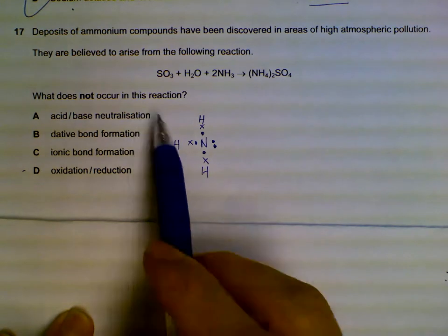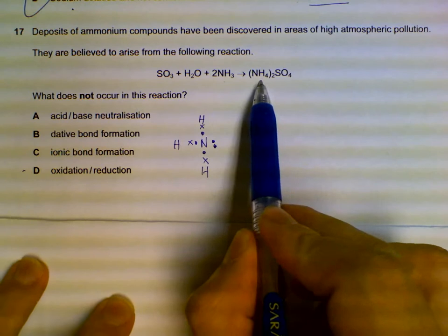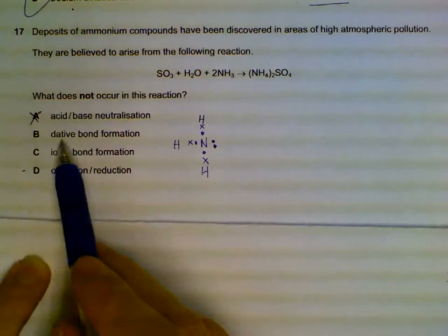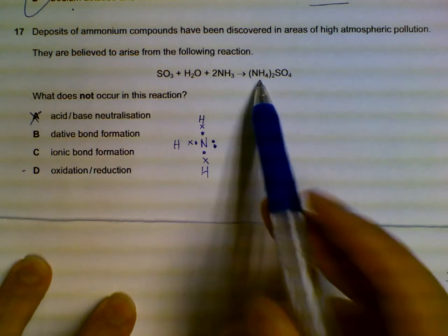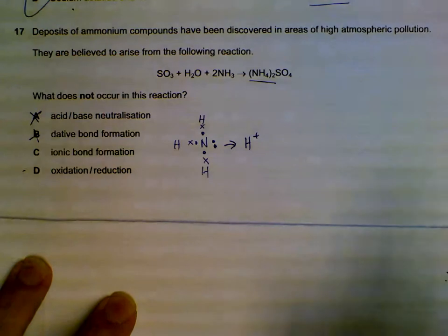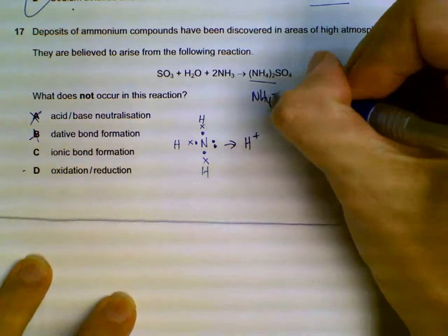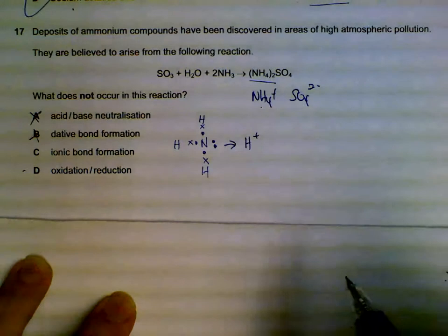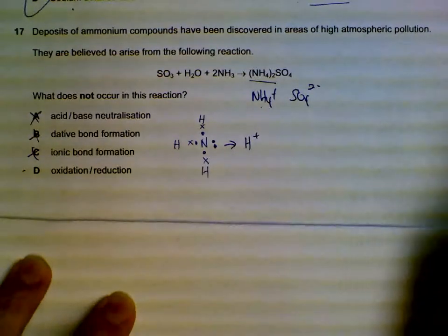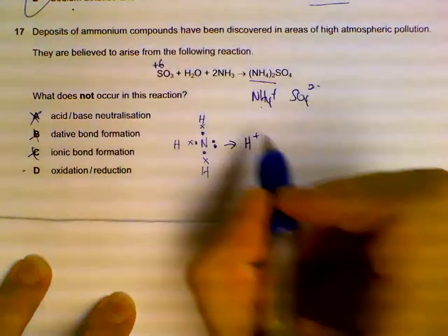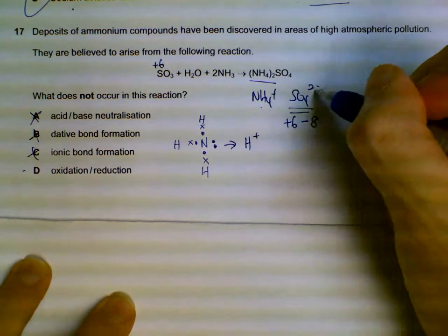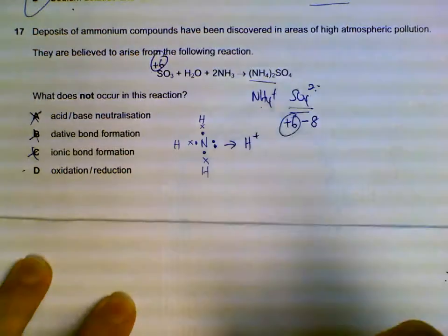Question 17: Which of the following does not occur in this reaction? First, ammonia becomes ammonium by accepting a proton, so there is an acid-base reaction. There is dative bond formation between ammonia and the hydrogen proton within NH4+. Ionic bond formation occurs between NH4+ and the sulfate ion. For oxidation/reduction, check the oxidation number - sulfur here is +6, and sulfur in the product is also +6, so there's no change.